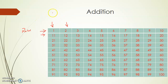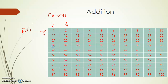So in this arrangement we can see rows and columns. The next number in the row is obtained by adding 1 to the previous number. Similarly, the next number in the column is obtained by adding 10 to the previous number. 1 plus 10 is 11, 11 plus 10 is 21, 21 plus 10 is 31.